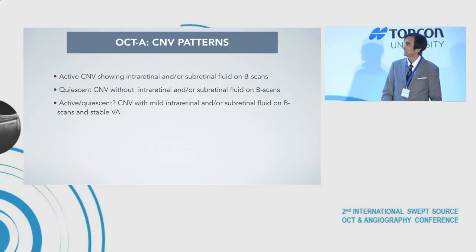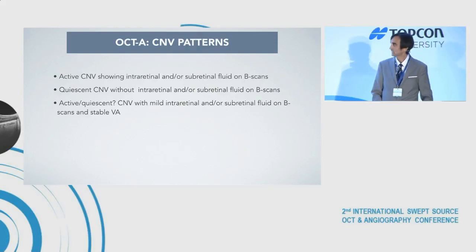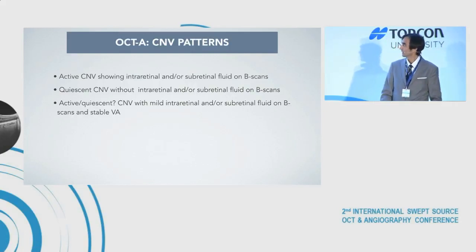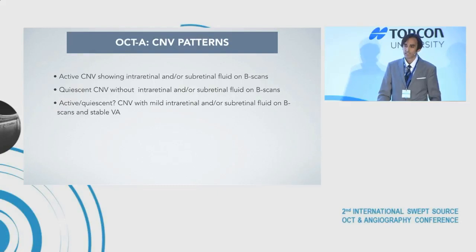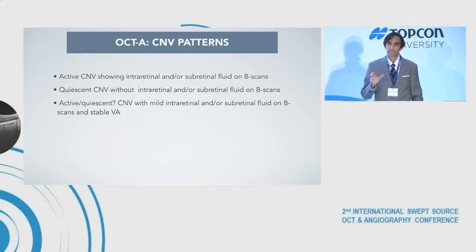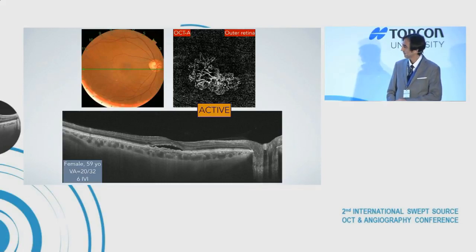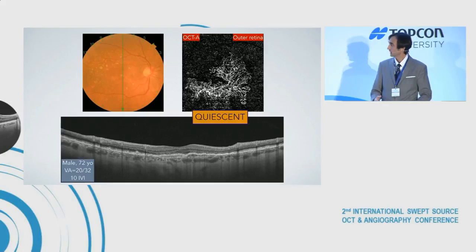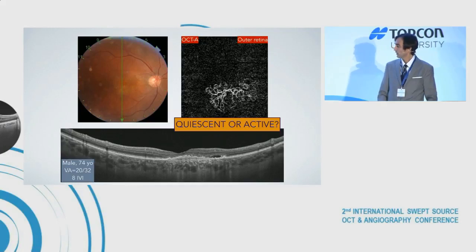With OCT angiography, we can basically determine three different CNV patterns: an active CNV showing intraretinal and/or subretinal fluid on B-scan; a quiescent CNV without that fluid on B-scan; and a third, doubtful type of lesion with mild intraretinal fluid and stable visual acuity, where it's very difficult to determine whether the lesion is active or not.